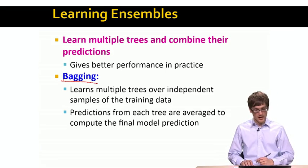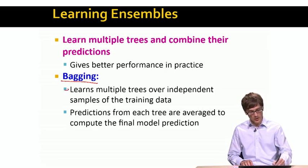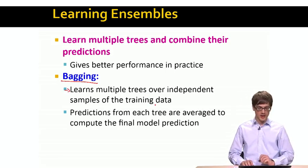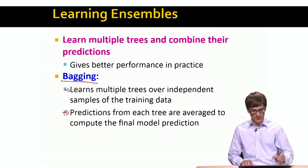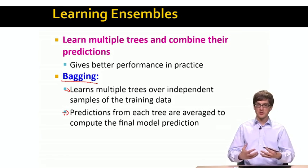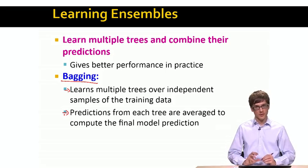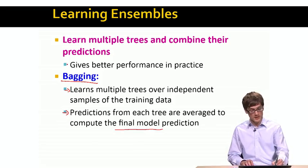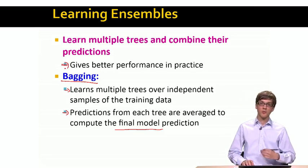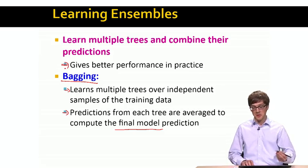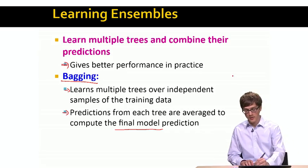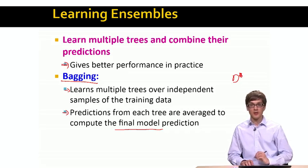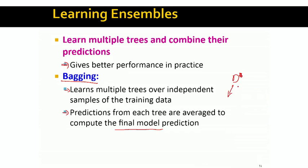One method that does this is called bagging. The idea is that we want to learn multiple trees over independent samples of the training data, and then the prediction from each tree is considered. We average predictions from all the trees and make the final prediction. It turns out that in practice, this kind of bagging approach works much better, especially if the classification or prediction task is very hard. The idea is very simple — we start with our initial dataset and create many random samples out of it.